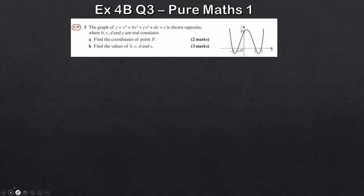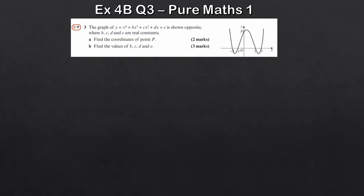The first question here — we've got this quartic graph, y equals x to the power of four. The question is split into two parts: first, find the coordinates of point P, which is where the graph crosses the y-axis, and then find the values of b, c, d and e in the expanded equation. Let's work part a first.